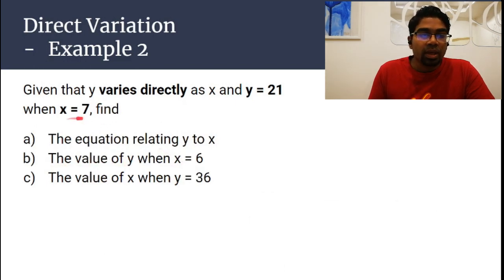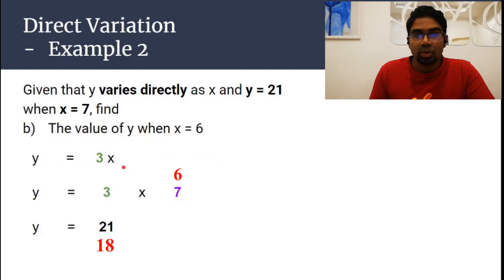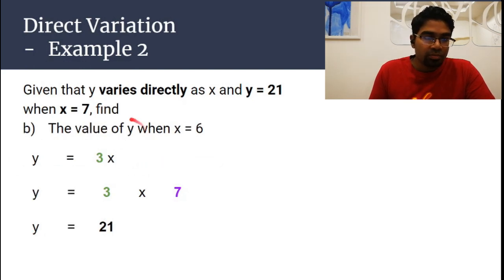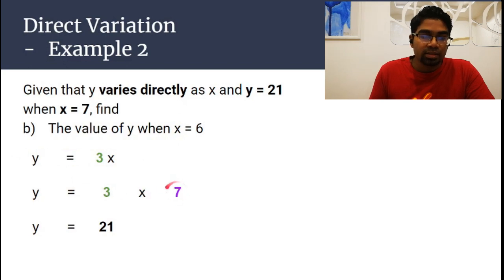We know that when x is 7, y is 21. Now they want the value of y when x is 6. We already have the equation y equals 3x. To find y, substitute x equals 6 into the equation: y equals 3 times 6.